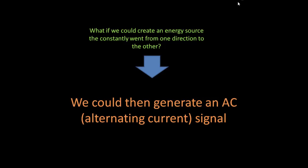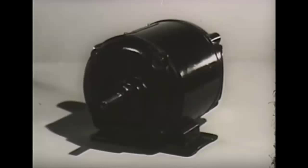So what if we could create an energy source that constantly went from one direction to the other and back and forth? In other words, you change the battery from positive to negative to negative to positive in a consistent manner — you could generate an AC alternating current signal. This is exactly what Nikola Tesla did way back in the day. To show how one might create such an energy source, I'm going to leverage this old Army public domain video.